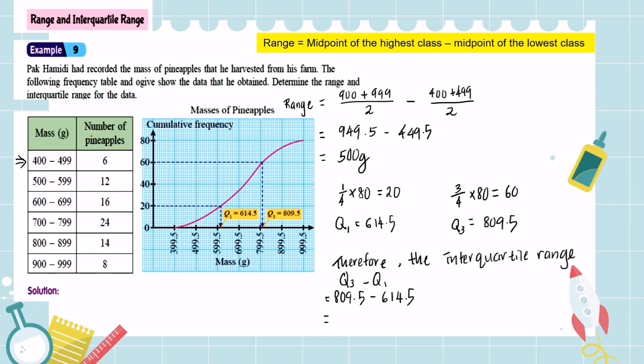So the interquartile range equals 195 grams. Conclusion: the difference between the heaviest pineapple and the lightest pineapple that lies in the middle 50% of the distribution is 195 grams.